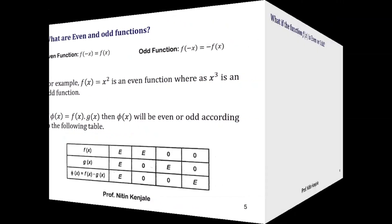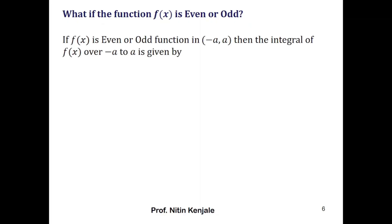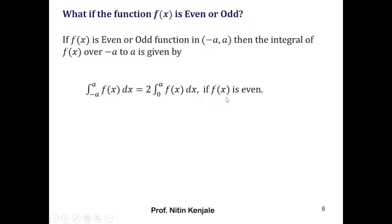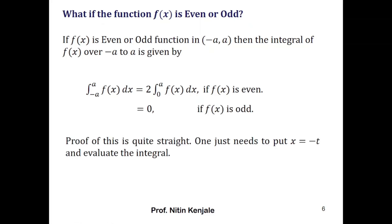Now let us see what happens when f(x) is even or odd. If f(x) is either an even or odd function on the interval minus a to a, then its integral over the limits minus a to a equals 2 times the integral of f(x) dx from 0 to a whenever f(x) is even, and equals 0 if f(x) is odd. The proof is straightforward — one just needs to substitute x equals minus t in the integral.